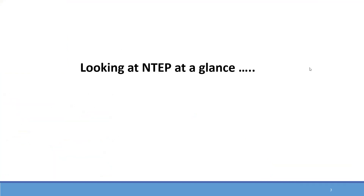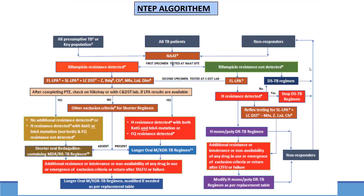Looking at NTP — the National Tuberculosis Program — at a glance, this is a very overwhelming slide. This is the algorithm in which all presumptive TB patients and all non-responders are basically subjected to NAT. NAT is a nucleic acid test, which could be a true NAT or a CBNAT. Based on both tests, we will get either a rifampicin resistance result of detected or not detected.